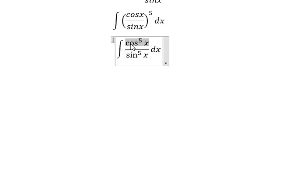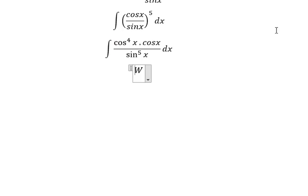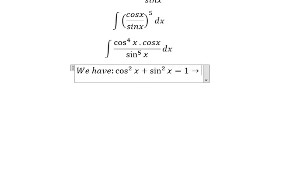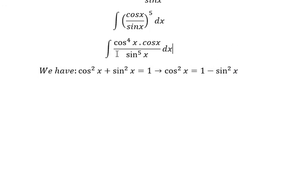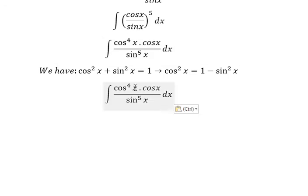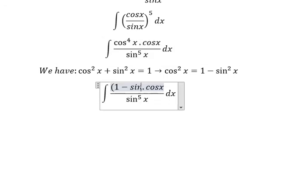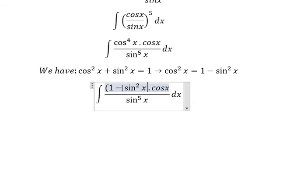This one we separate them into cosine x to the power of 4 multiply with cosine x. In here we have cosine x squared plus sine x squared equal to number 1, so we go about cosine x squared equal to 1 minus sine x squared. This one we change to 1 minus sine x squared to the power of 2.